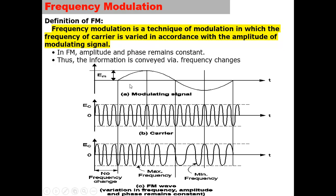When modulation happens, you can see that as the amplitude of this signal increases, the frequency becomes higher and higher, while for the negative cycles, since the amplitude of the modulating signal is decreasing, the frequency becomes smaller and smaller. So the frequency is adjusted in accordance with the modulating signal amplitude.